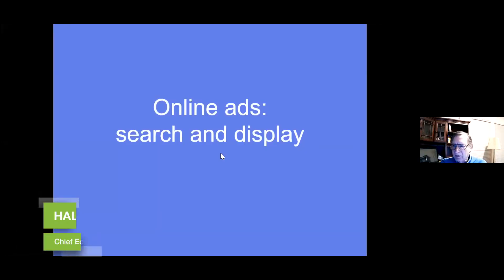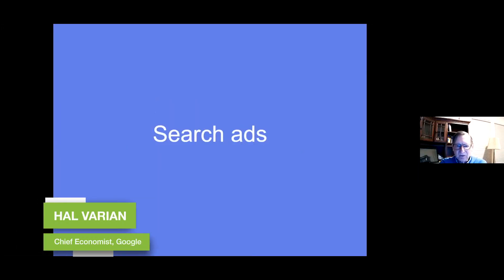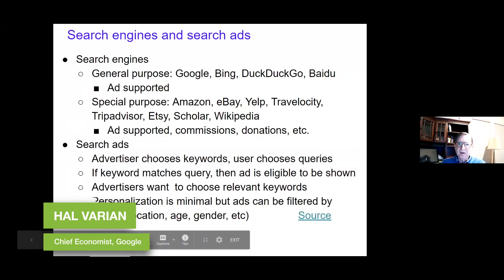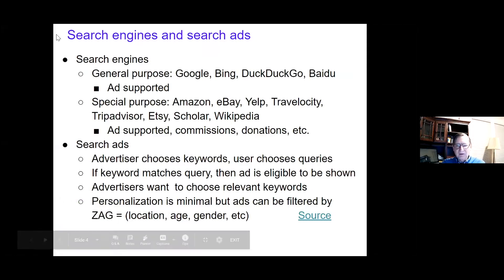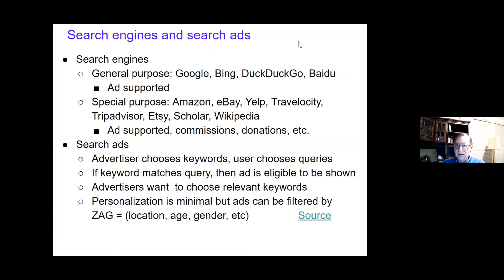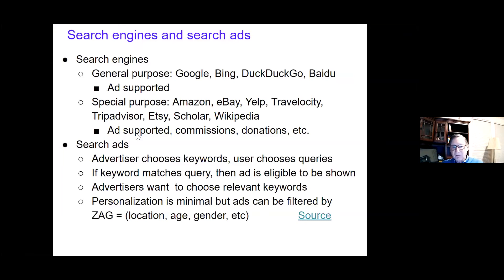I have a couple points repeating what was said earlier, so I'll zip over those quickly. There's a distinction between search engines and search ads. Search engines include general purpose ones like Google, Bing, and DuckDuckGo, and special purpose ones like Amazon, which is really a product search engine, as are eBay, Yelp, and Travelocity. These are sometimes ad-supported, sometimes donation-based like Wikipedia.